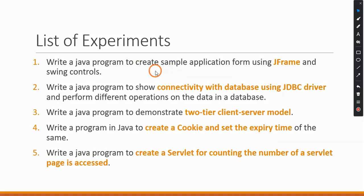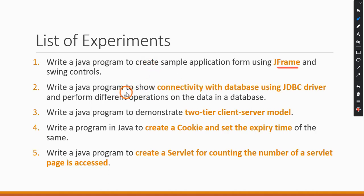The first program is to write a Java program to create a sample application using JFrame and other Swing controls. In this program we are going to use the Swing package available in Java. The second program is to write a Java program to show connectivity with a database using a JDBC driver.